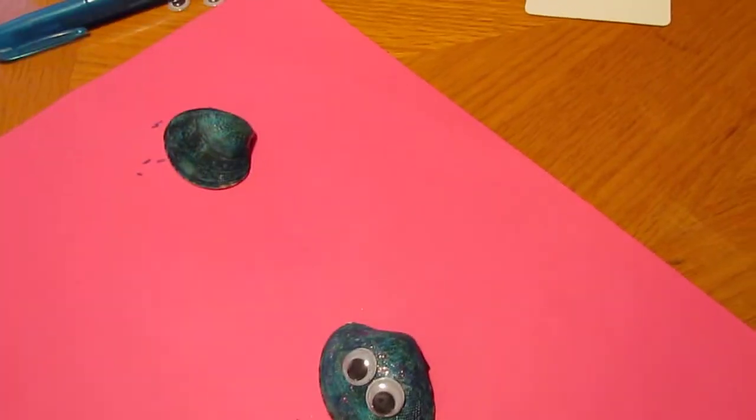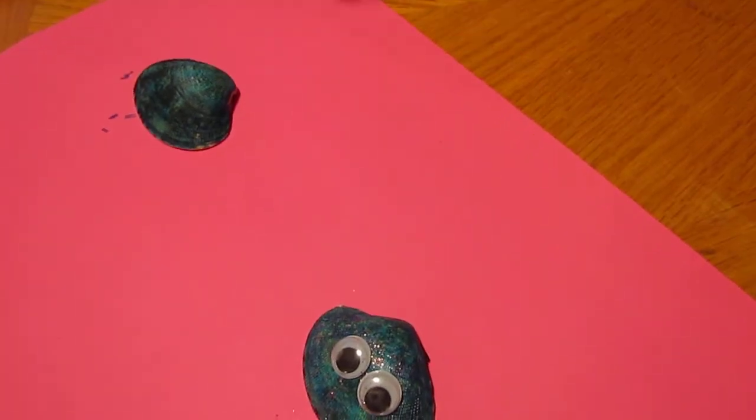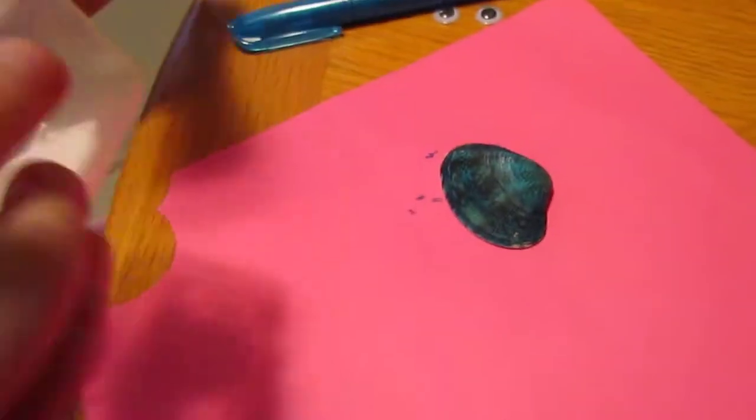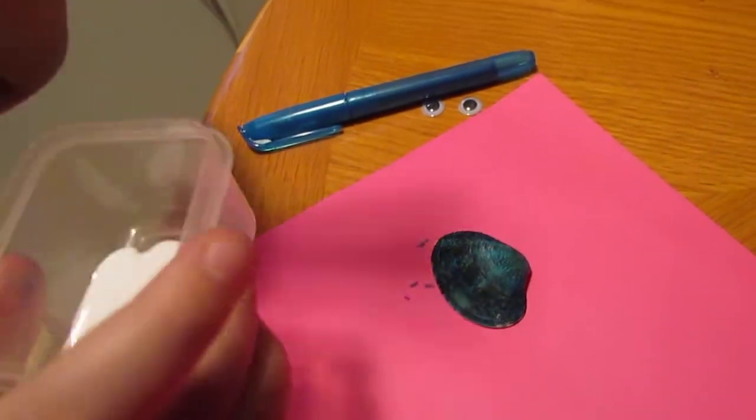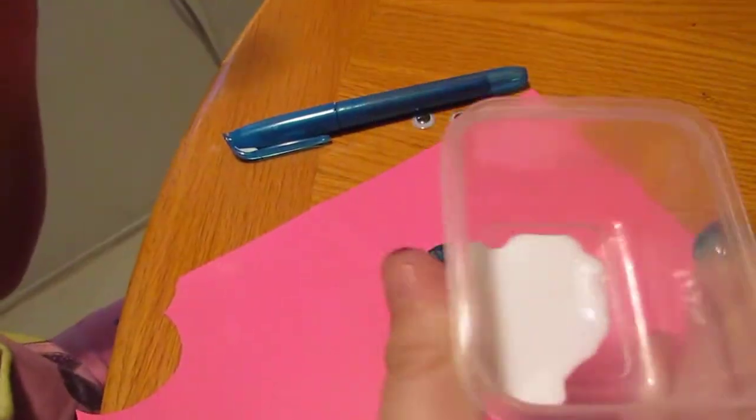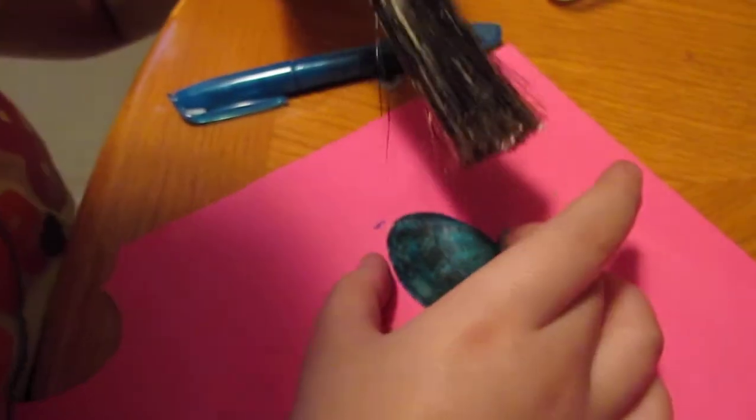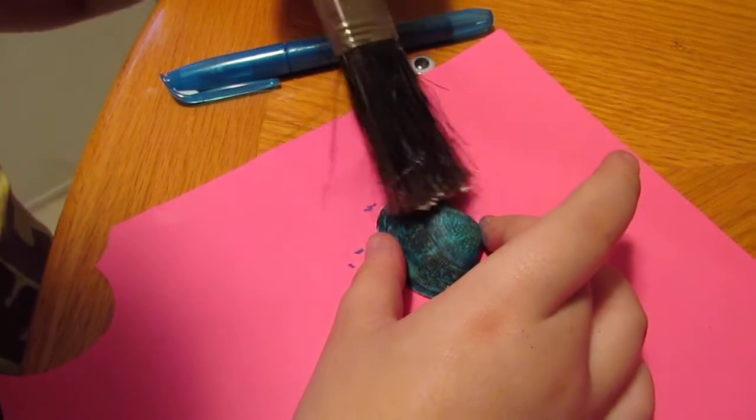Okay, now put glue on. Get your brush - you need to put glue but not that big, just like this size. You put the brush in, then you start scrubbing it on the shell.